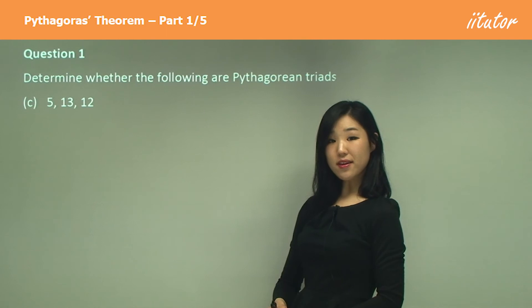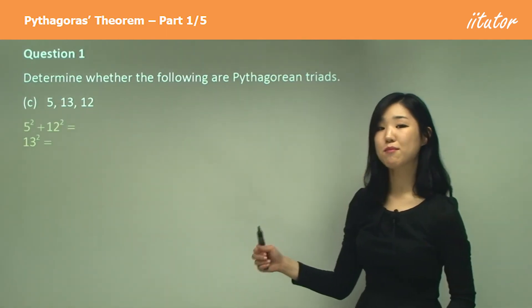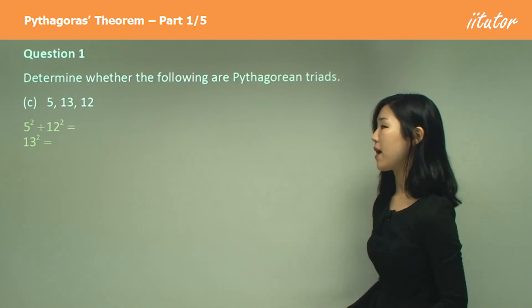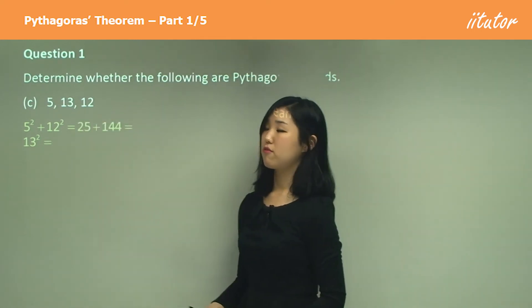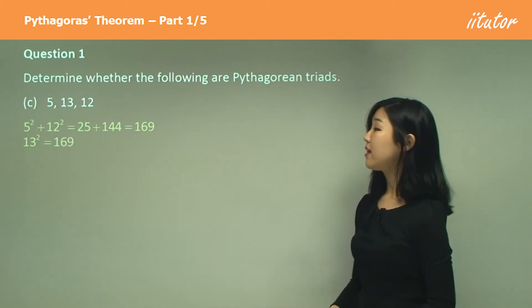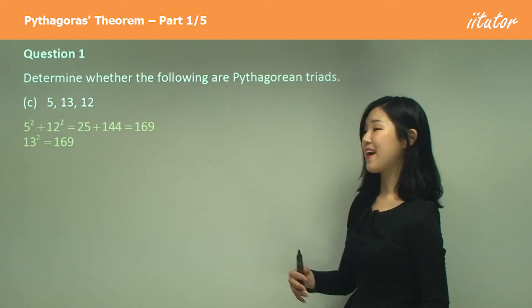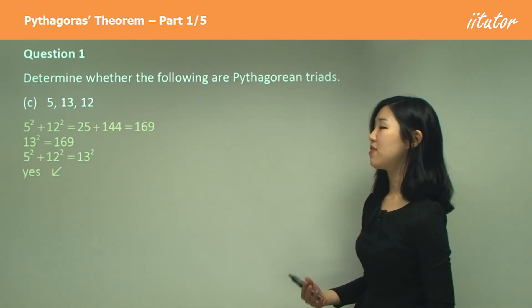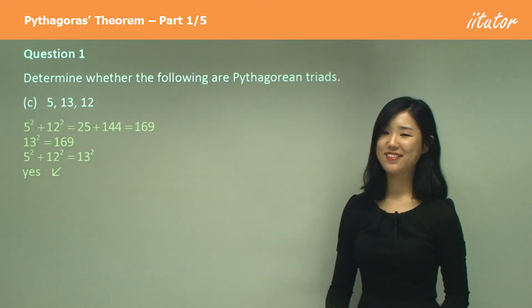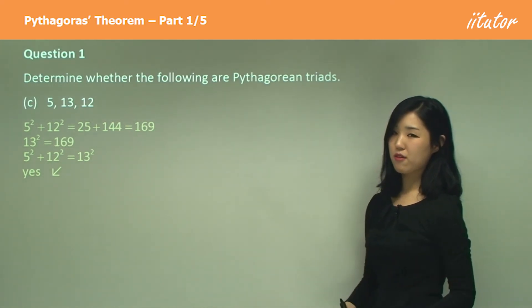What's the largest side in this one? It's obviously 13. So 5 squared plus 12 squared must be equal to 13 squared. That's 25 plus 144, which gives you 169, and we know that 13 squared is 169. Are they equal? Yes they are. So we say they're equal, therefore yes. That's all you need to say. It's very simple. Just make sure you remember the Pythagoras theorem.